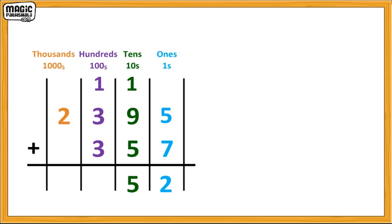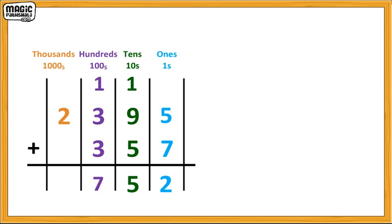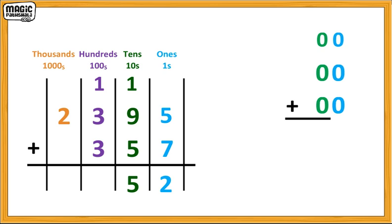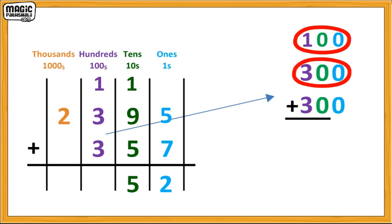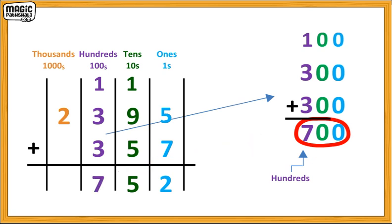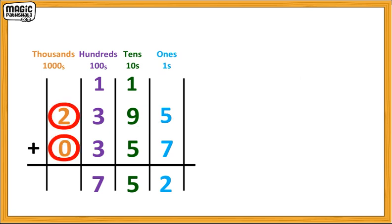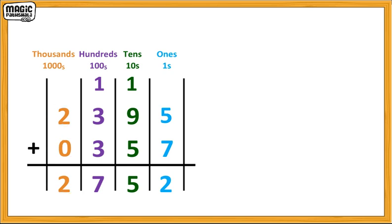It's the same for hundreds. We add one plus three plus three, which equals seven — that is one hundred plus three hundred plus three hundred, which gives us seven hundred. So seven goes in the hundreds column and there is no carry over. In the thousands column, there is two plus zero, which equals two. So two goes in the thousands column. Therefore, two-thousand three-hundred-and-ninety-five plus three-hundred-and-fifty-seven equals two-thousand seven-hundred-and-fifty-two.